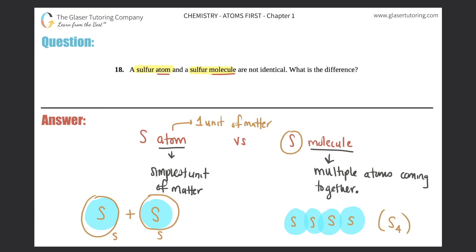Multiple atoms are coming together to form the molecule. Here I have four separate ones, one two three and four, that's why it turns into S4 and that's your molecule. There's so many different molecules out there and they all come from individual atoms, guys.